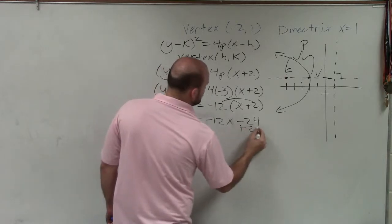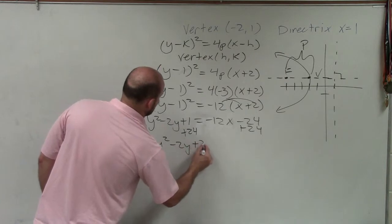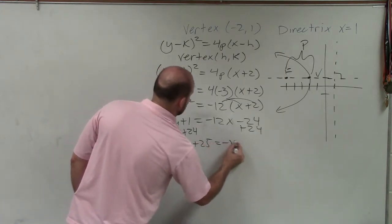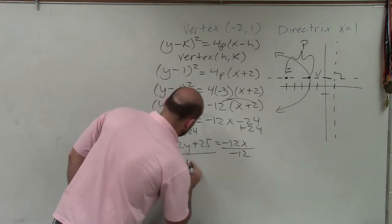I'll add 24 to both sides. And I get y squared minus 2y plus 25 equals negative 12x. Divide by negative 12. Divide by negative 12.